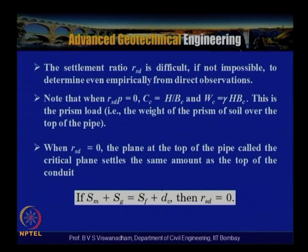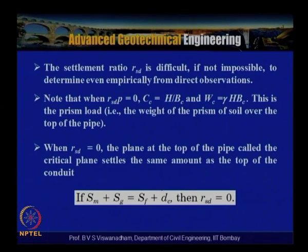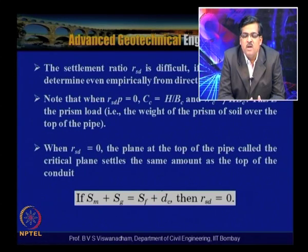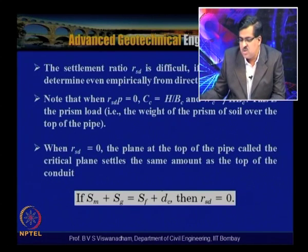The settlement ratio rsd is difficult — if not impossible — to determine empirically from direct observations. When rsd·p = 0, Cc = h/bc and Wc = γ × h × bc, which is simply the prism load — the weight of soil above the top of the pipe. When rsd = 0, the critical plane (top of pipe) settles the same amount as the surrounding soil, meaning SM + SG = SF + DC.